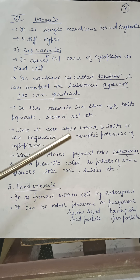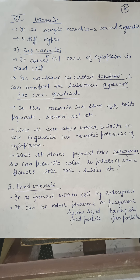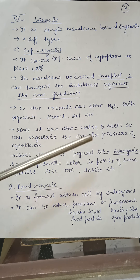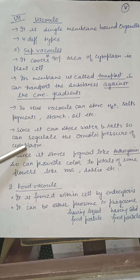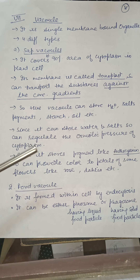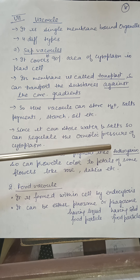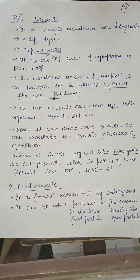Since the sap vacuole can store water and salts, it can regulate the osmotic pressure of the cytoplasm. It can also store the pigment anthocyanin, which provides colors to petals of flowers like rose and dahlia.